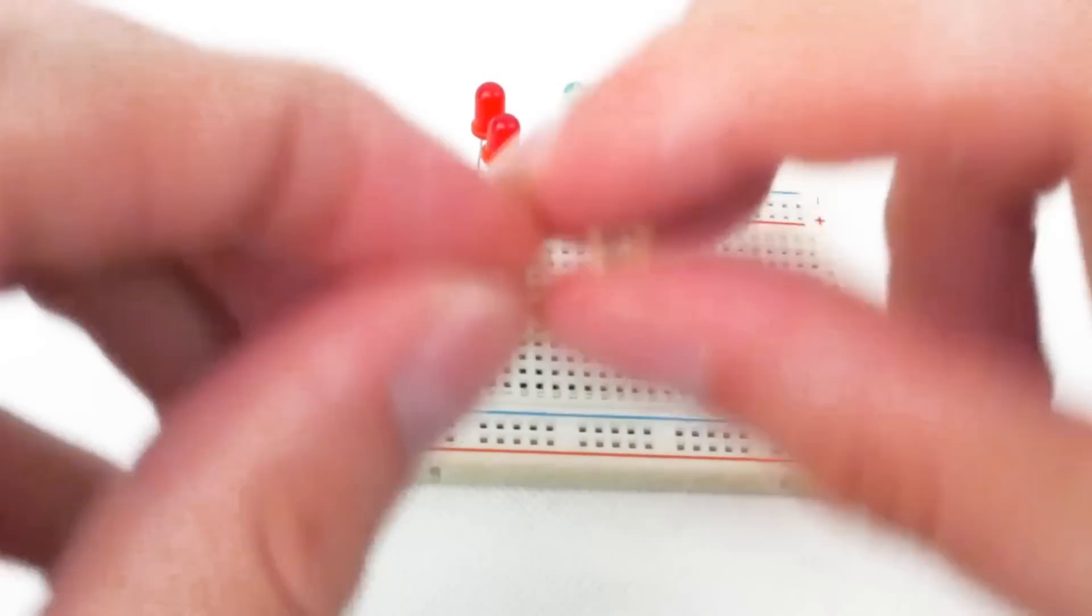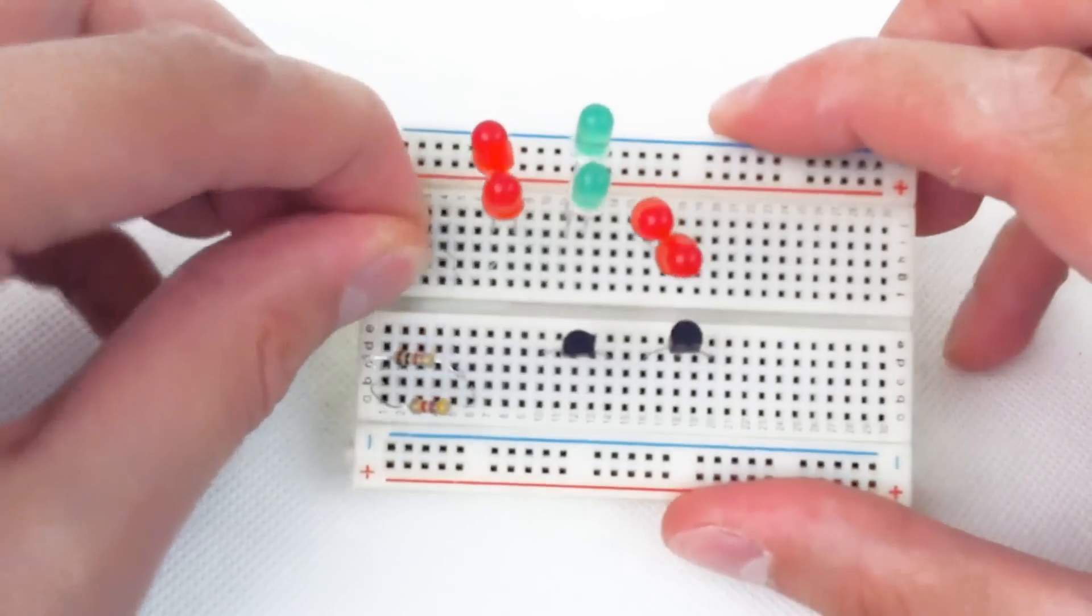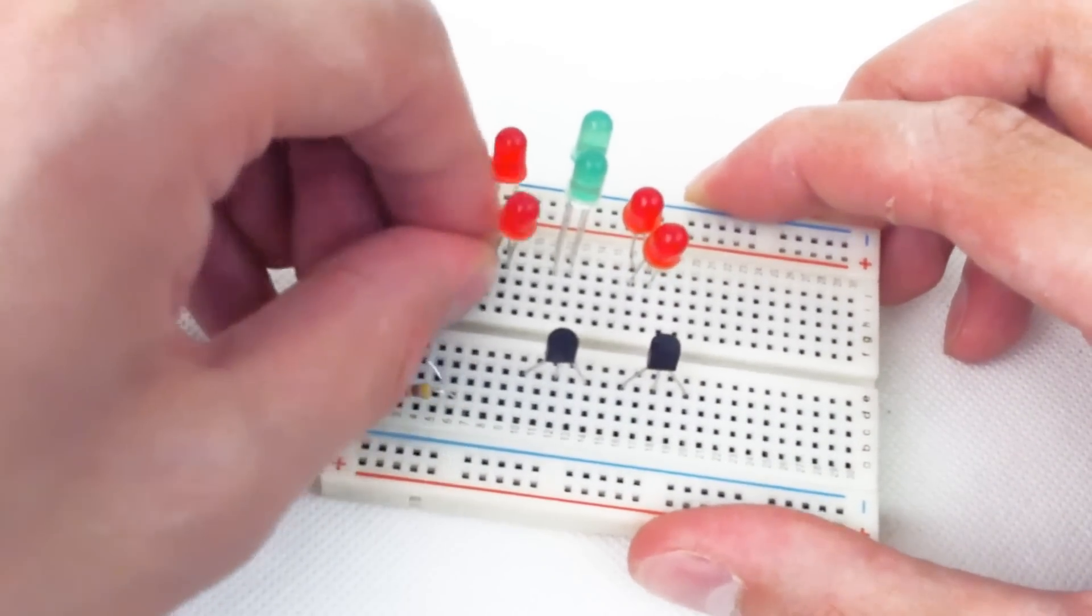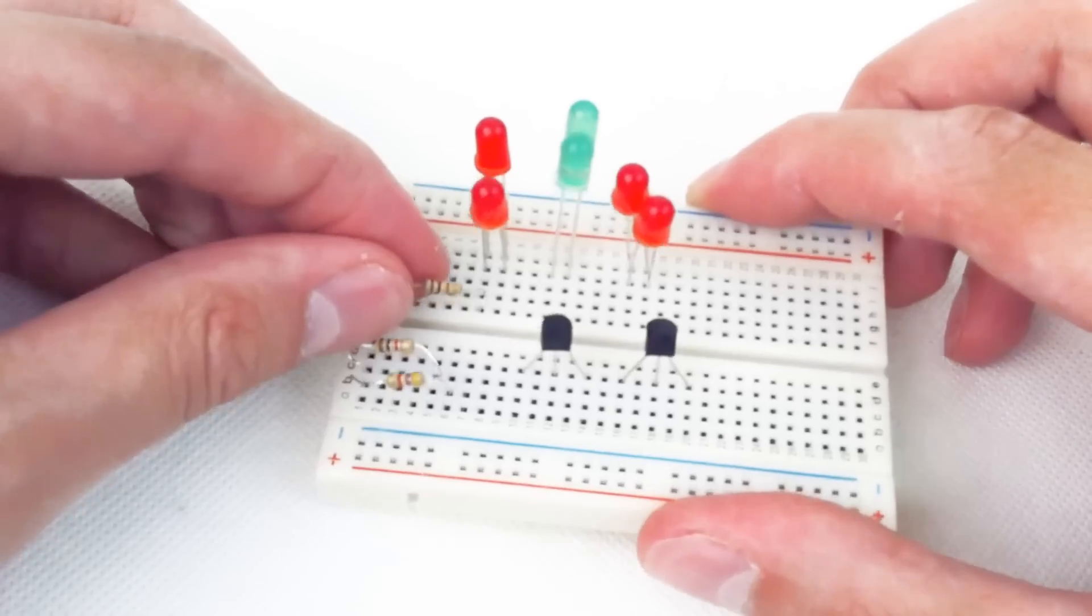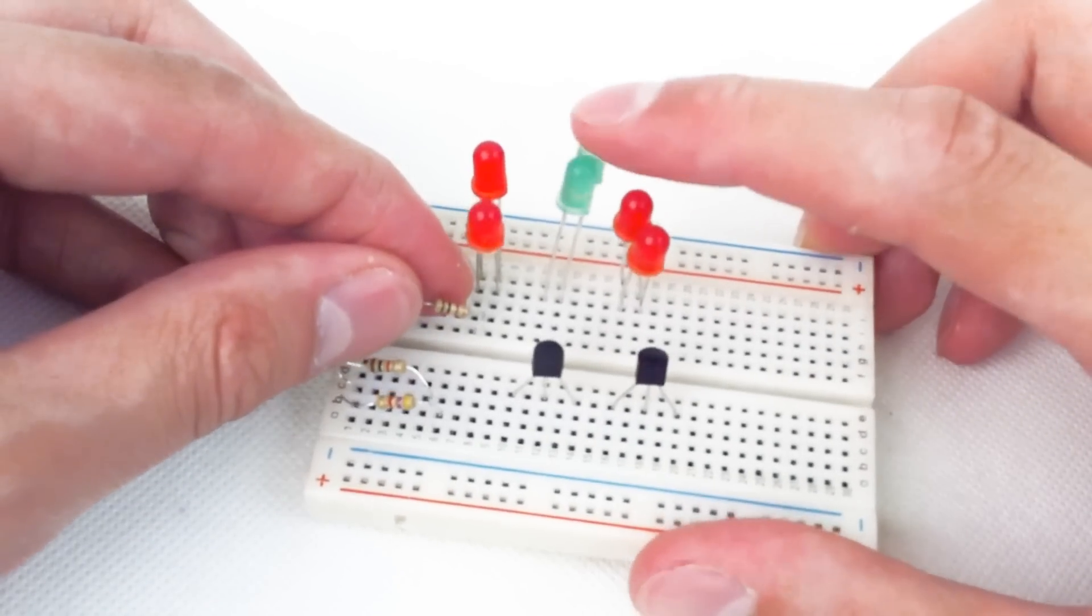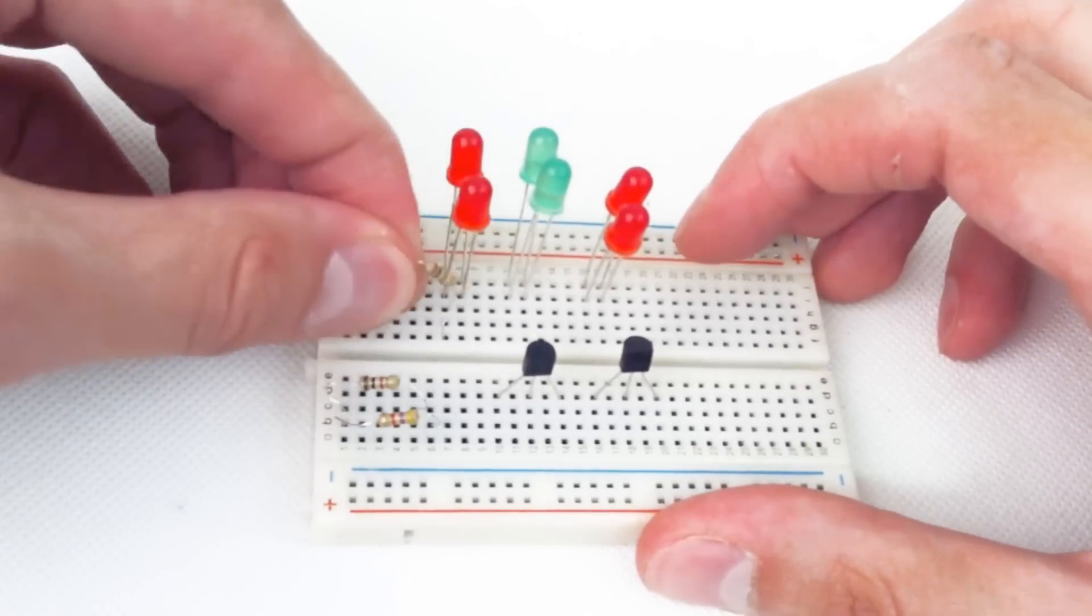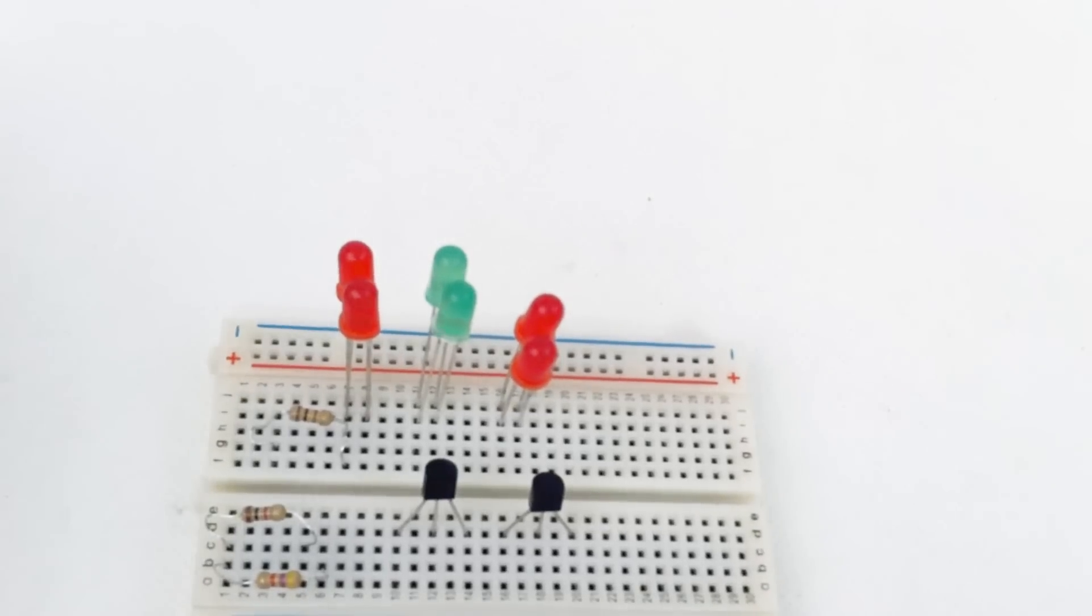Now the 100 ohm resistor. One side goes in the same holes as the positive leg of the LED, the other end three sets of holes to the left. And now our jumper wires to put it all together.